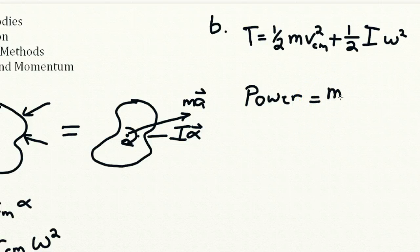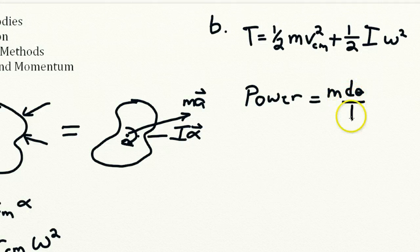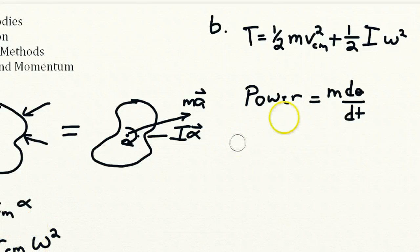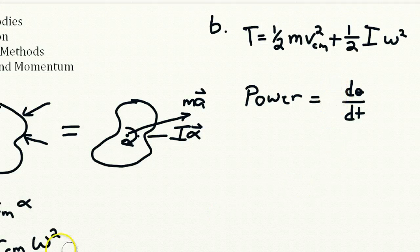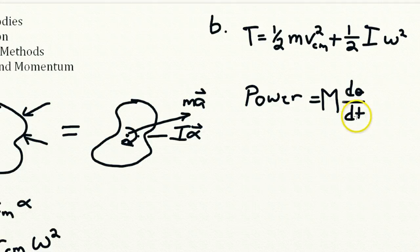We could also write the power as M times d-theta/dt, which equals M times omega. Here, M is not the mass but the magnitude of the couple.